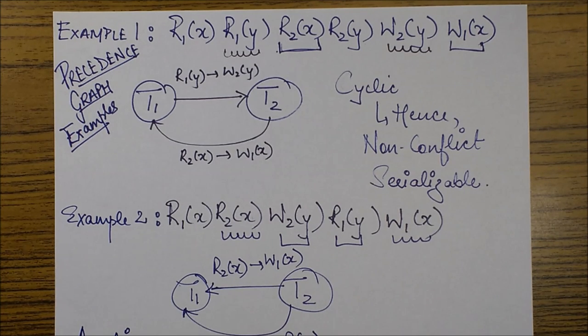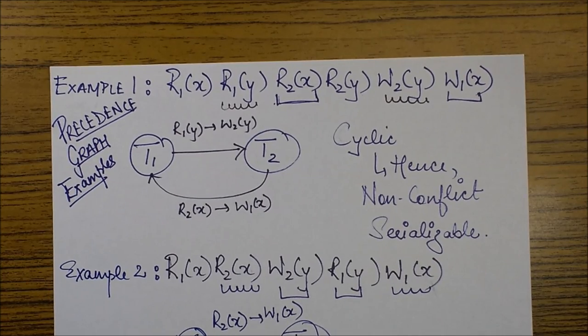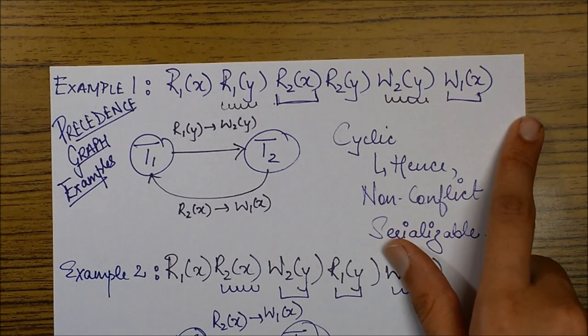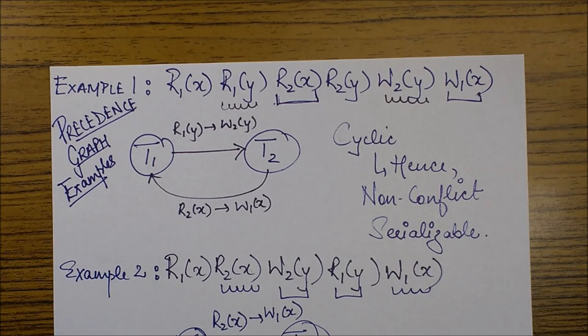In this particular session we will be discussing some examples based on the same concept. So we have the example of two schedules given over here. For the first example there are some read write operations listed. What is the first step? First of all we will be discovering what are the conflict pairs in this example.